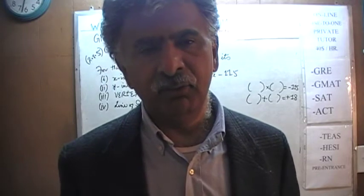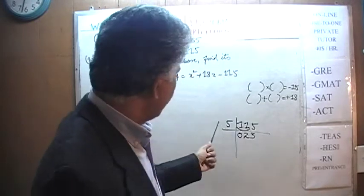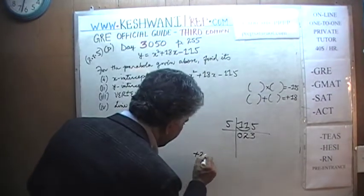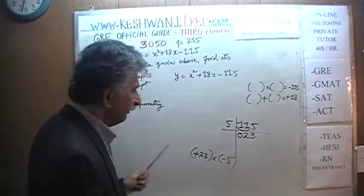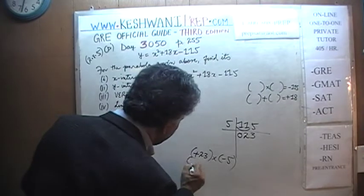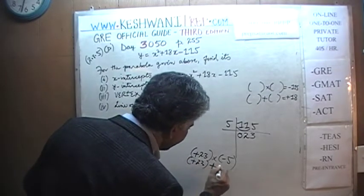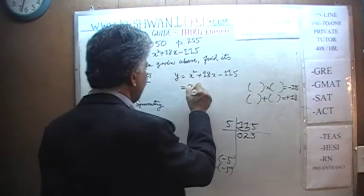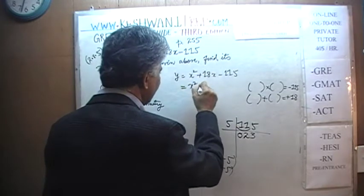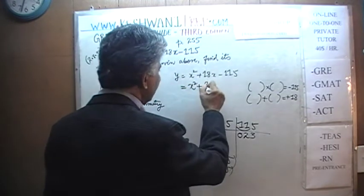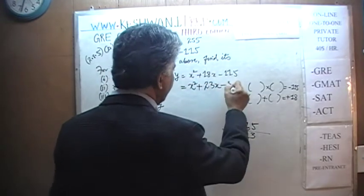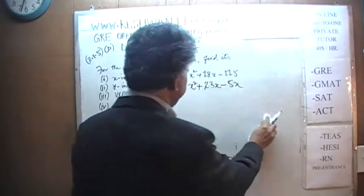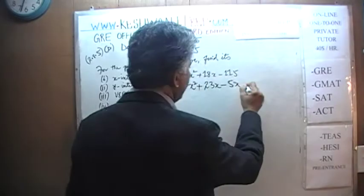Positive 23 times negative 5 gives us the −115 we need, and +23 + (−5) = +18. So we break up 18x into 23x and −5x. We rewrite y = x² + 23x − 5x − 115. From the first two terms, the common factor is x, giving x(x + 23). From the last two terms, the common factor is negative five, giving −5(x + 23).